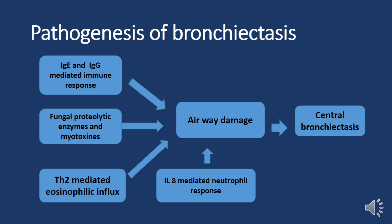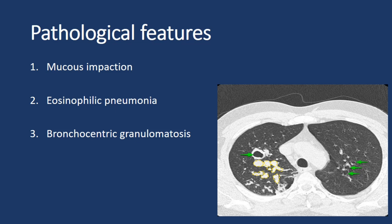When aspergillus colonizes the airways of asthmatic individuals, it triggers robust immune responses mediated by both IgE and IgG, layered upon the existing asthmatic environment. Despite these vigorous immune reactions, the fungus persists, leading to recurrent symptoms. The release of proteolytic enzymes and mycotoxins by the fungi, along with Th2-mediated eosinophilic and IL-8-mediated neutrophilic inflammation, contributes to airway damage and the development of central bronchiectasis.